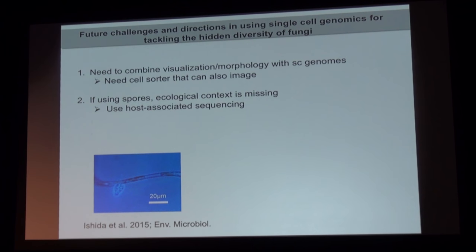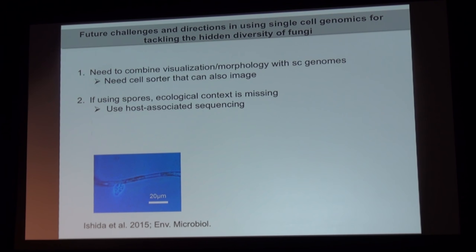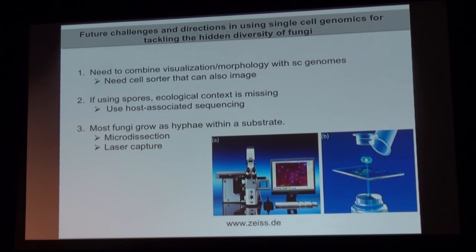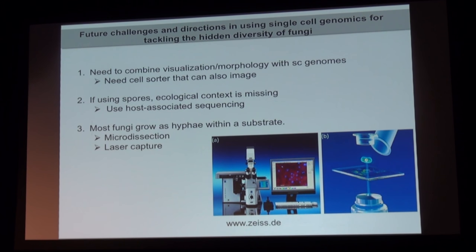Another issue is we lose ecological context when just looking at spores. Here's a Cryptomycota that Mako Kagami's lab found attached to a diatom — so in that case we know the host is a diatom, which is useful. We probably need to stop doing single organisms and instead do host-associated genome sequencing, since Cryptomycota are probably almost all parasites. But most fungi grow as hyphae, which makes them difficult to tackle, so we would need to use methods like microdissection.